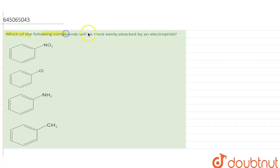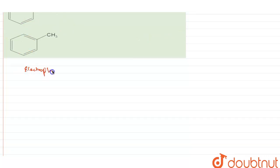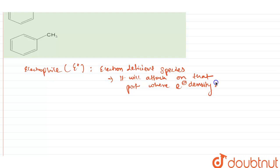Hello everyone. In this question, it is given that which of the following compounds will be most easily attacked by an electrophile. First, you should know the meaning of an electrophile. An electrophile (E+) is an electron-deficient species. It will attack on that part where electron density is more. Keeping this theory in mind, we can proceed with the options given to us.